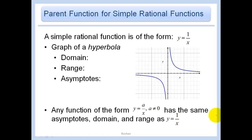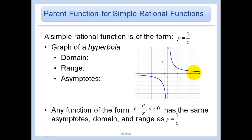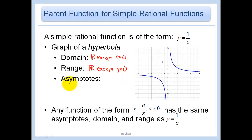We're going to start with a simple rational function of the form y equals 1 over x. That is the graph of a hyperbola — a new word you should know. It consists of two symmetrical branches. The domain and range are both all real numbers except for 0. In this example, we have two asymptotes: a vertical asymptote at x equals 0 and a horizontal asymptote at y equals 0.